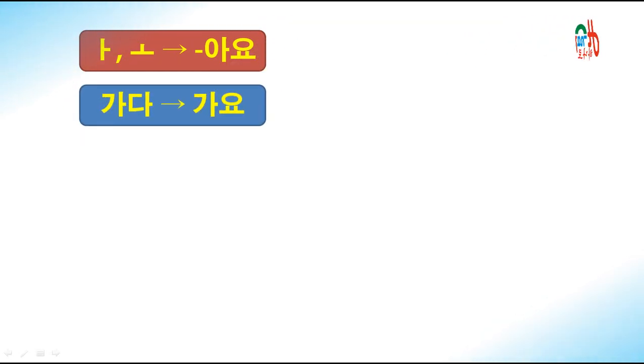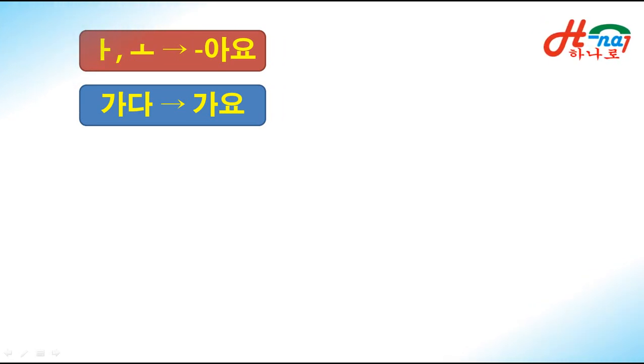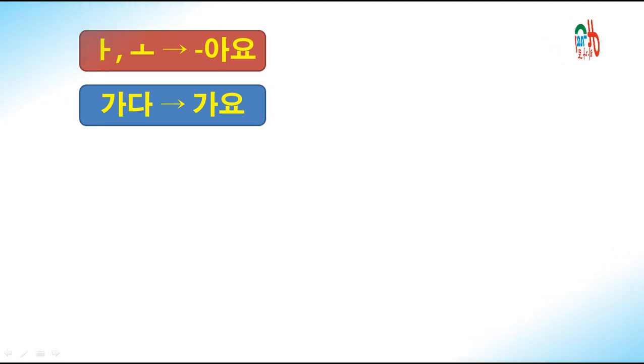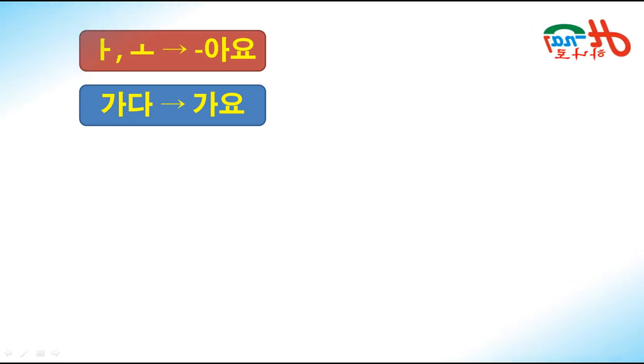Sebagai contoh, kalau kalian mencari kata, akar kata gada, yaitu dari ga. Tinggal menghilangkan da-nya, maka kalian sudah mendapatkan akar dari gada yaitu ga. Gada karena sistem akhiran katanya A, maka termasuk ditambah ayo. Gada plus ayo jadinya ga-ayo, digabung menjadi ga-yo.